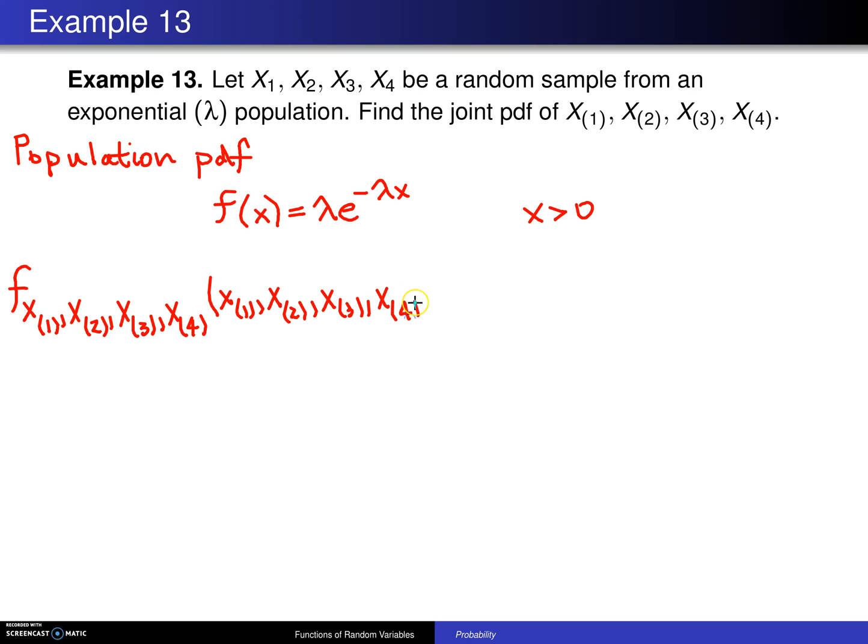And in this particular case, because n is equal to 4, we start out with a 4 factorial, and that gets multiplied by lambda e to the minus lambda x1, times lambda e to the minus lambda x2, and then the last term will be lambda e to the minus lambda x4.